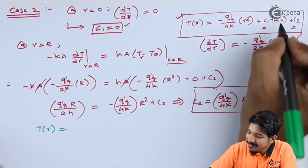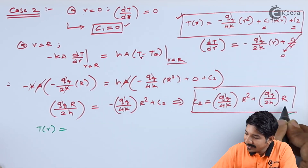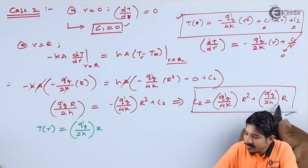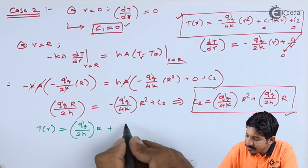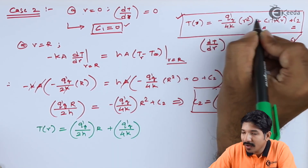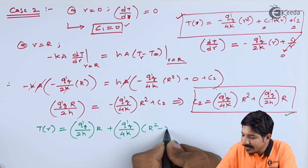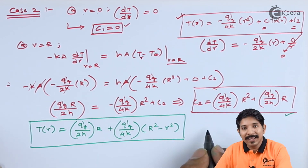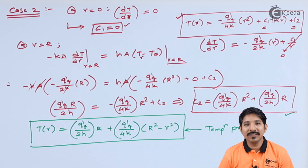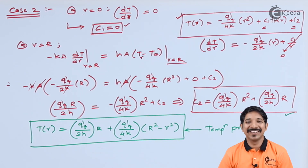Substituting C₁ = 0 and C₂ into the temperature profile, the final temperature distribution is: T(r) = Q'_G·R/(2h) + Q'_G/(4K) · (R² - r²). This is the temperature profile for the second case. This is how we solve these two cases of boundary conditions to get the temperature distribution for internal heat generation in cylinders. Thank you for watching.